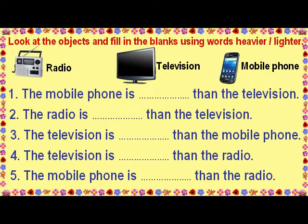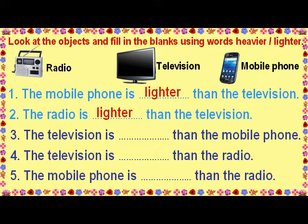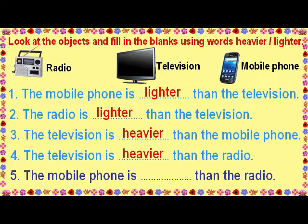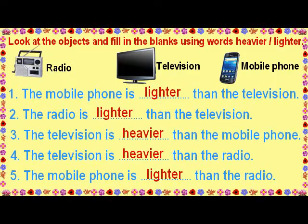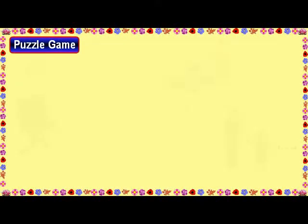Look at the objects and fill in the blanks using the words heavier or lighter. The mobile phone is lighter than the television. The radio is lighter than the television. The television is heavier than the mobile phone. The television is heavier than the radio. The mobile phone is lighter than the radio.